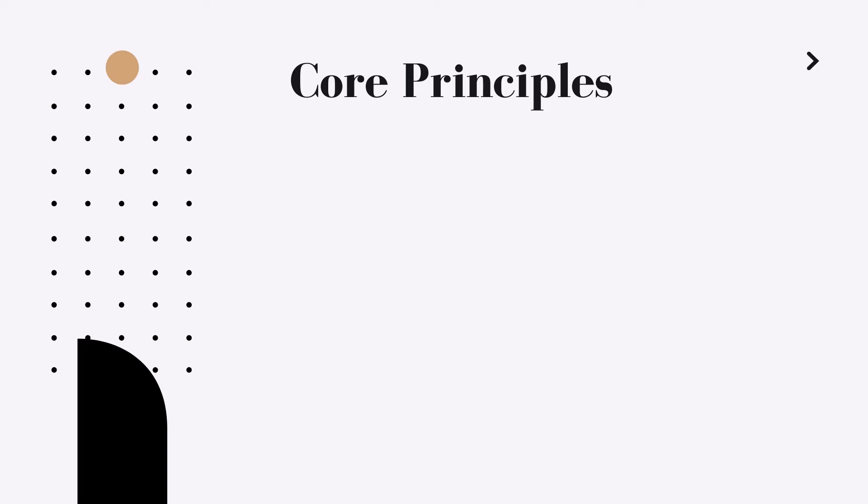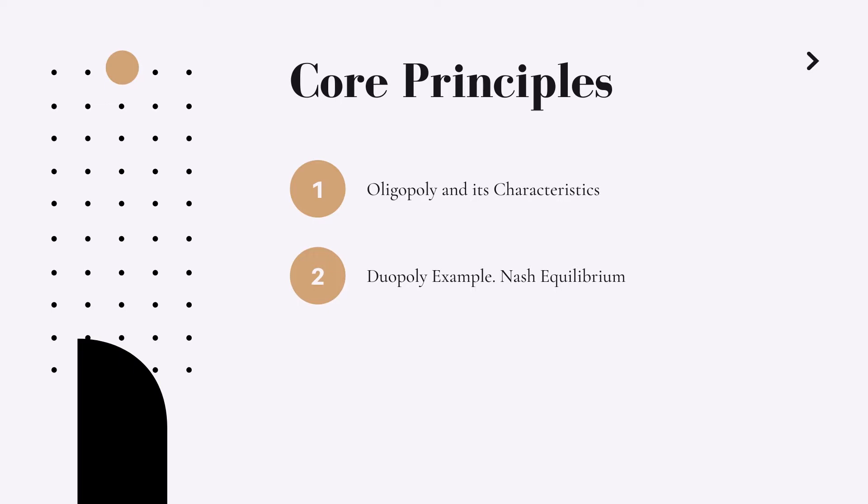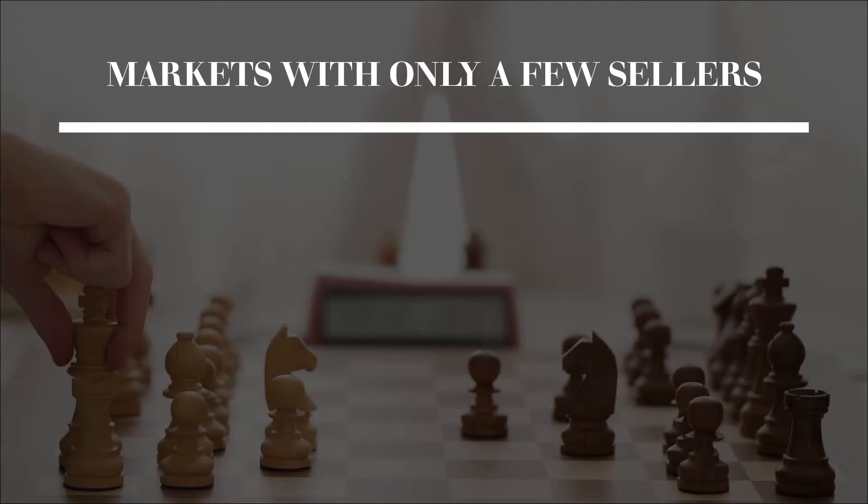Hi everyone and welcome to the revision of chapter 17 oligopoly. Today we will speak about oligopolies and their characteristics. We'll discuss the example of a duopoly and understand what Nash equilibrium is, and finally we'll discuss a very interesting topic in economics: game theory, on the example of prisoner's dilemma.